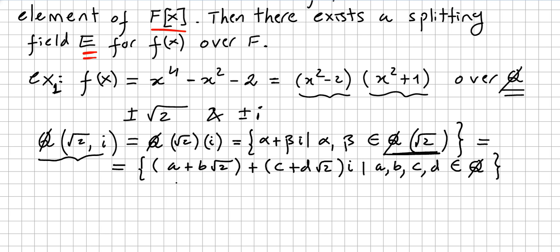So the elements will have this form: a + b√2 + (c + d√2)i, where a, b, c, d are in the rationals Q. This is the splitting field for this polynomial over the rationals.